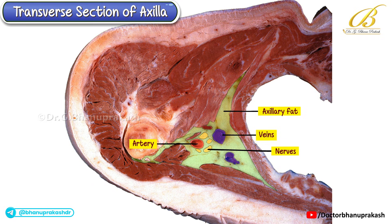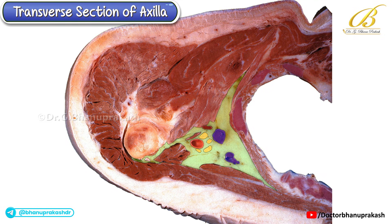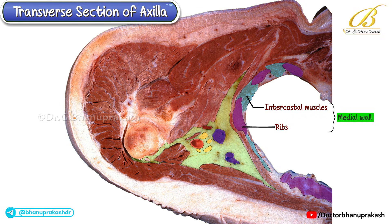But before we look at the contents, it's important to first orient the specimen to understand which sides represent the anterior, posterior, medial, and lateral aspects. If you observe carefully, you'll notice a lateral convexity formed by the chest wall, which includes the upper four ribs and their intercostal muscles. This side, therefore, marks the medial wall of the axilla. Along this region, we can also appreciate the serratus anterior muscle, which takes its origin from the ribs.